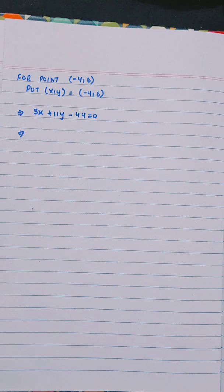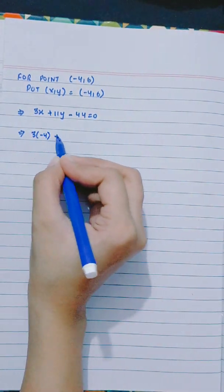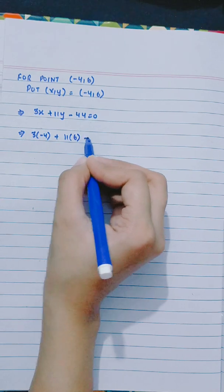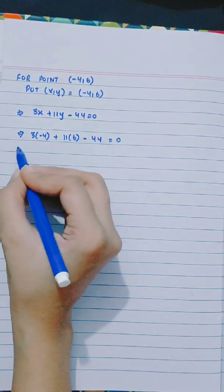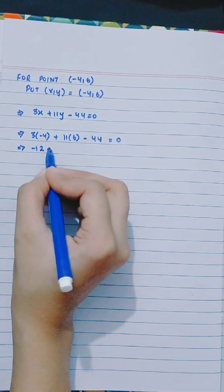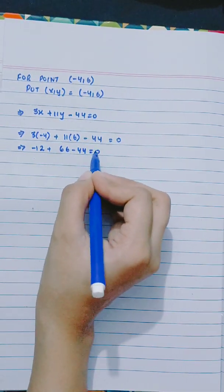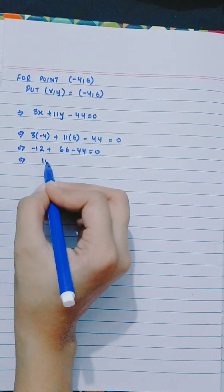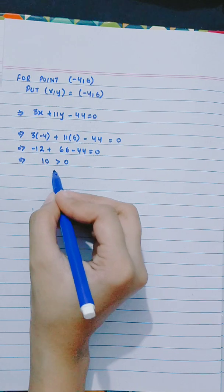For point (-4,6), put x, y equals (-4,6). 3 into -4 plus 11 into 6 minus 44 equals 0. -12 plus 66 minus 44 equals 0. 10 greater than 0, therefore above the line.